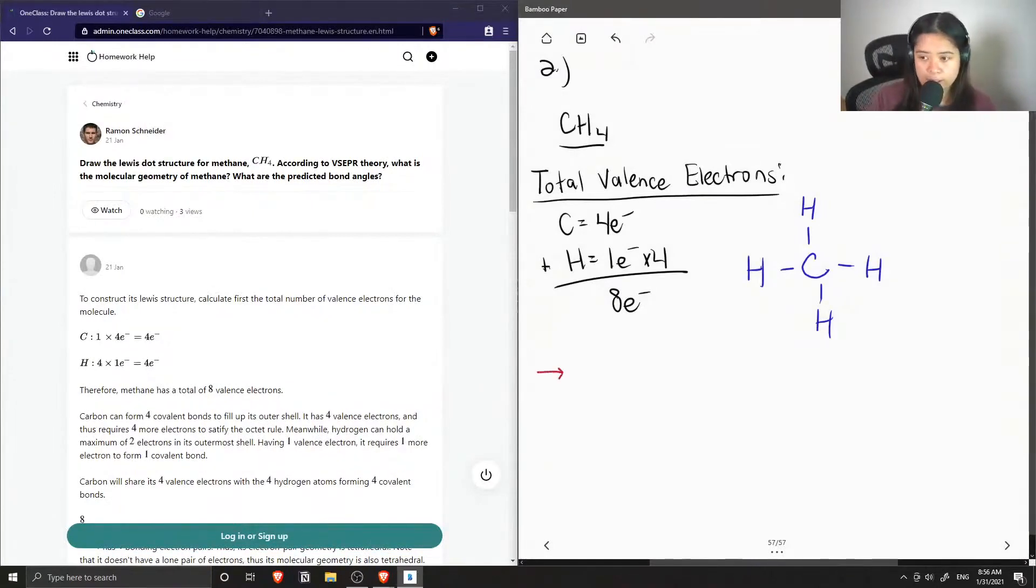Looking at the central atom, this carbon, we see it has zero lone pairs and four bonded atoms.